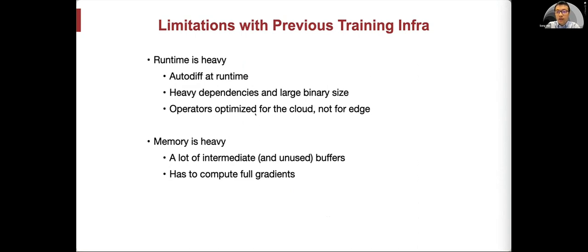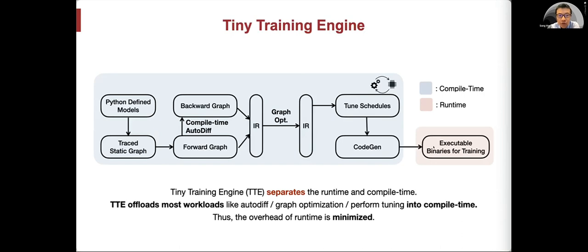Let's first review the previous deep learning training infrastructure. We first need to get a computational graph for forward. Then we run the auto-grad engine to get the computation graph for the backward. And next, we get the detailed execution schedules. Previously, all these parts on the right-hand side are done at runtime, which gives a lot of flexibility but hurts efficiency. For tiny machine learning, we believe such modality is not optimal. We need a completely new paradigm for tiny on-device training. This runtime auto-diff is consuming too much overhead. One overhead is the runtime is heavy. Auto-diff at runtime is super inefficient. It has heavy dependencies and large binary size. Binary size is super important for microcontrollers since we have only one or two megabytes of flash - even the binary matters. Operators are optimized for the cloud, not for the edge.